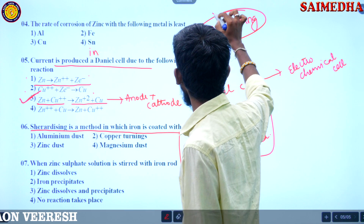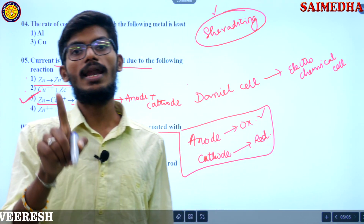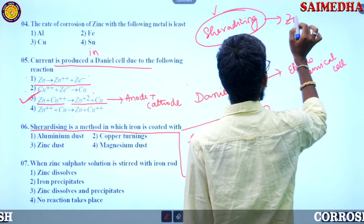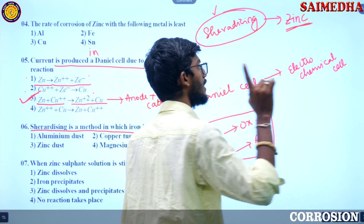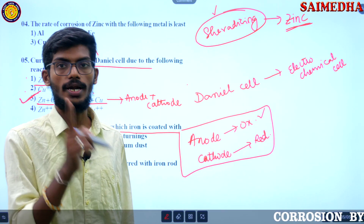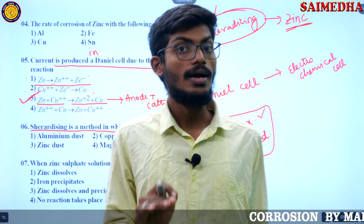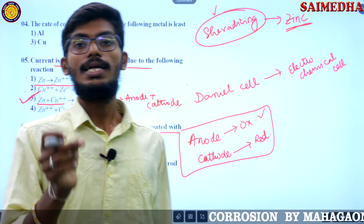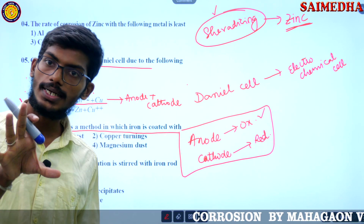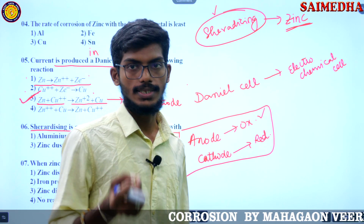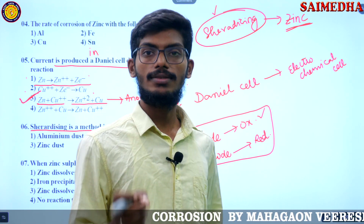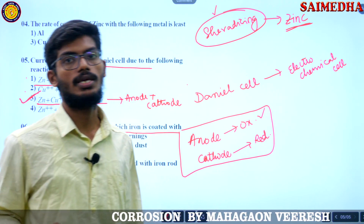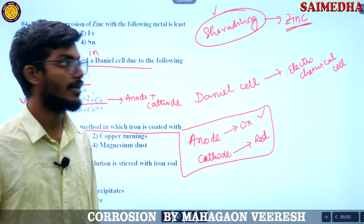Sherardizing uses a particular metal — that metal is zinc. Only zinc is the metal used in sherardizing. We take zinc and make it into powder, called zinc powder or zinc dust. Then we take that zinc dust and spray it on another metal.